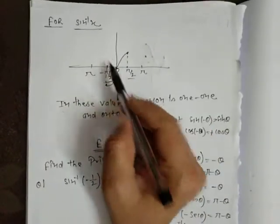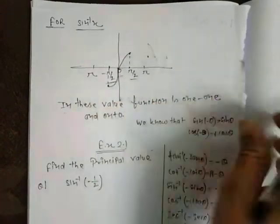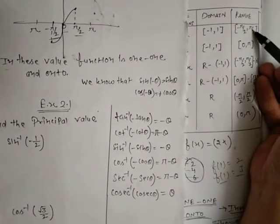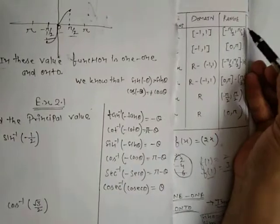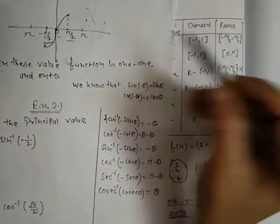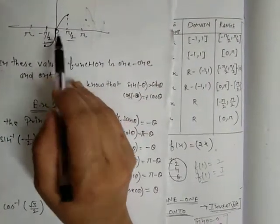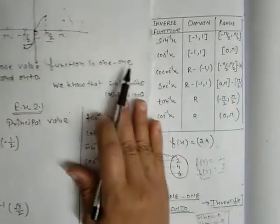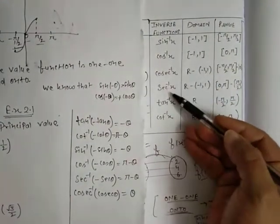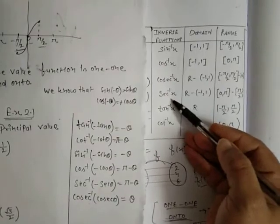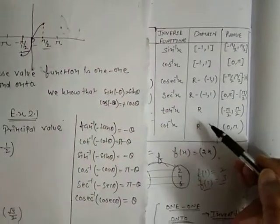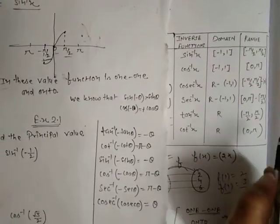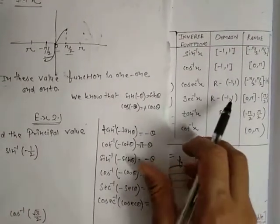So we take the range as minus π/2 to π/2 — this is the range for which sin x is both one-one and onto, and the inverse function exists. The same applies to other functions: sine inverse x, cos inverse x, cosecant inverse, and secant inverse. You don't have to be confused — I had already given you a table and explained it. This chapter is actually very easy.